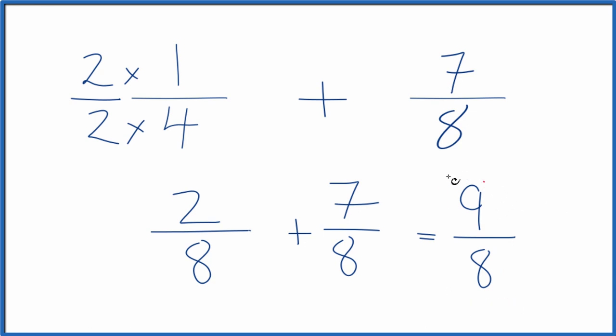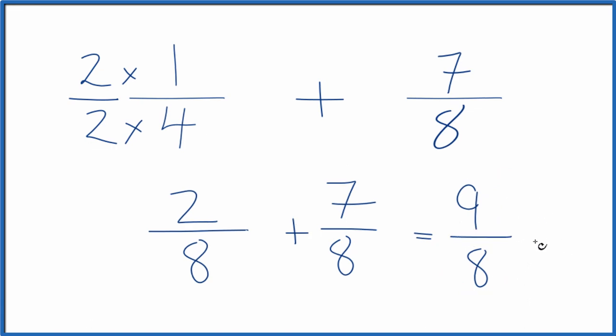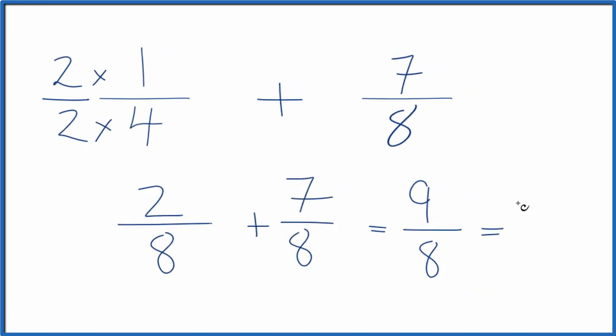This is an improper fraction because the numerator is larger than the denominator, so you could change it to a mixed fraction. 8 goes into 9 one time with 1 left over, we bring the 8 across. 1 times 8, that's 8, plus 1 is 9, and then we just have 8 that stays the same.